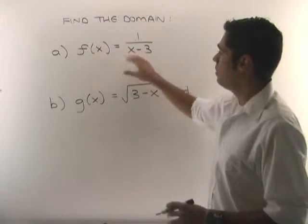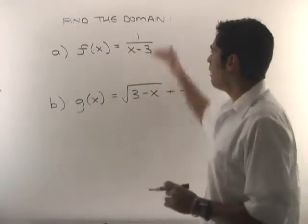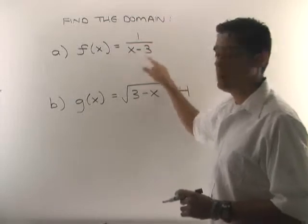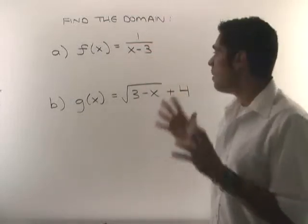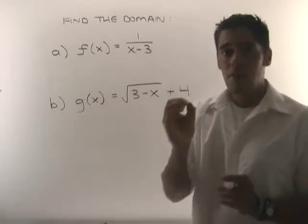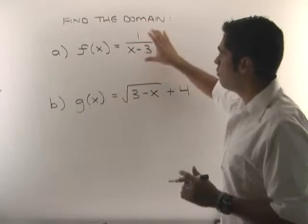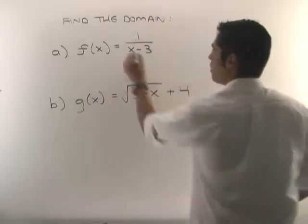So we need to be careful with certain things that we plug into functions because they can't handle them. Now let's look at our first function. The main thing we want to see here is that we have a fraction and our variable appears in the denominator. And that means that there's a possibility that our denominator could be zero. And we know that in mathematics you can never divide by zero.